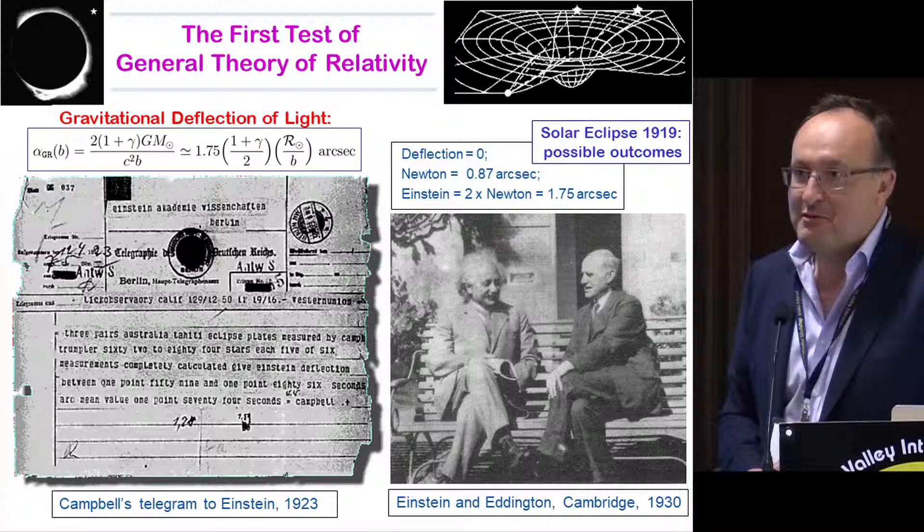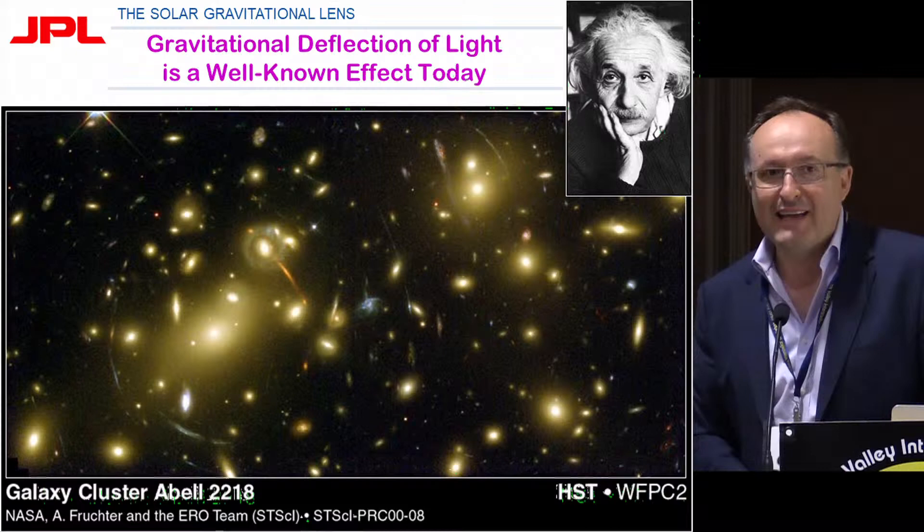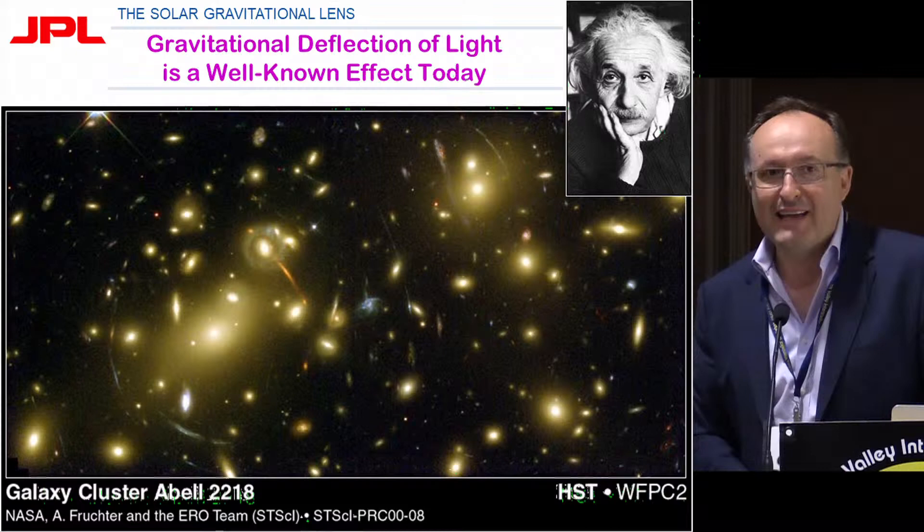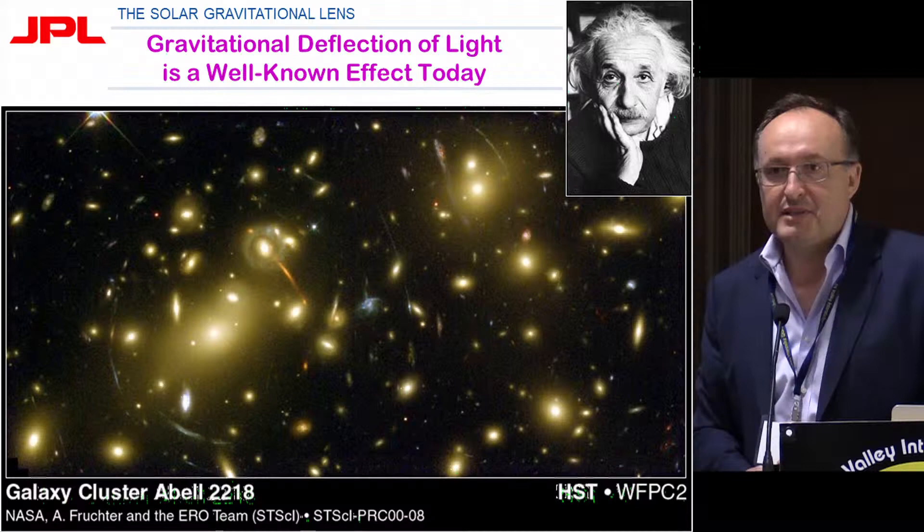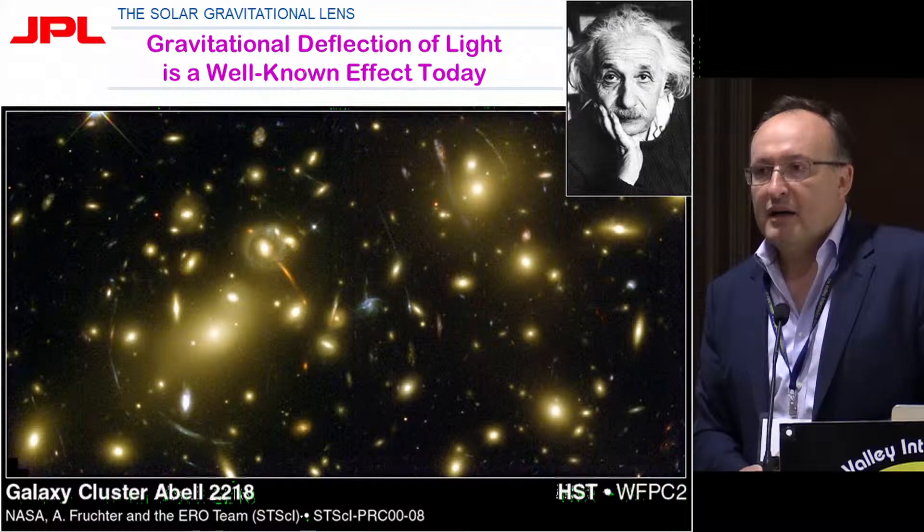Today we know that gravitational deflection of light is happening everywhere in the universe. You see those wonderful arcs, and we use gravitational lensing and microlensing as a tool to study the universe — essentially the distribution of dark matter in the universe. But in reality, how well do we know gravity? Can we use it for anything else?